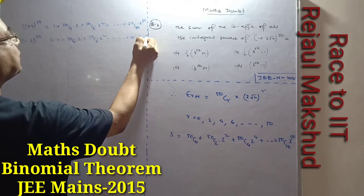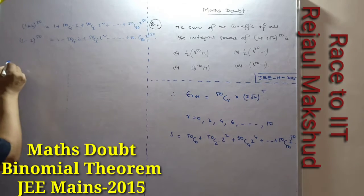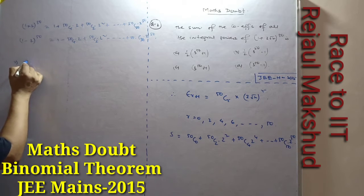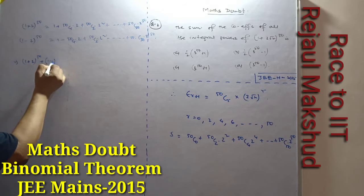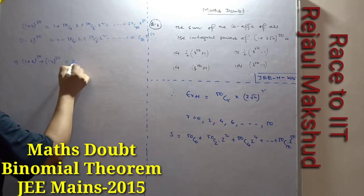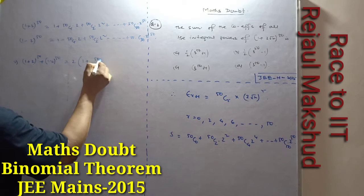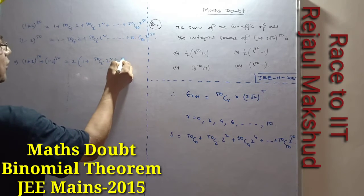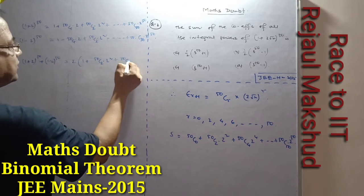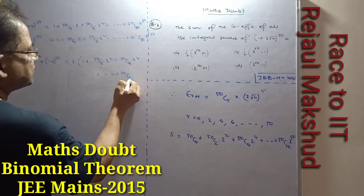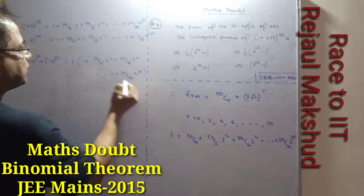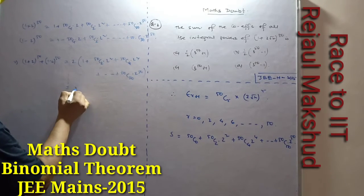Now, when we add these two expressions — (1+√2)^50 and (1-√2)^50 — the odd terms cancel out and we get twice of: 50C0 + 50C2·2^2 + 50C4·2^4 + ... + 50C50·2^50, which is twice our required sum.